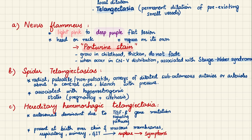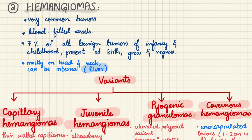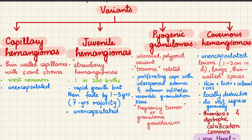Hemangiomas are very common benign tumors made up of blood-filled vessels, accounting for 7% of all benign tumors of infancy and childhood. They are present at birth, grow, and then eventually regress by themselves. They are mostly present on the head and neck, and rarely internally in the liver, spleen, and kidneys. There are four variants: capillary, juvenile, pyogenic granuloma, and cavernous hemangiomas.